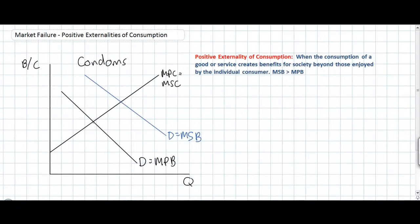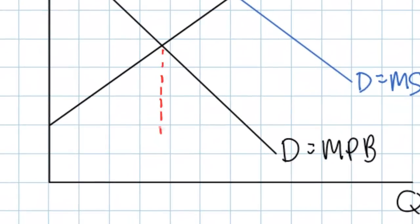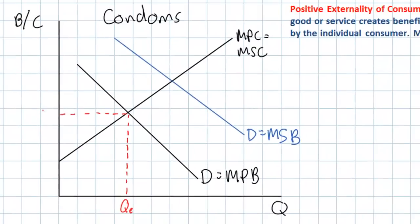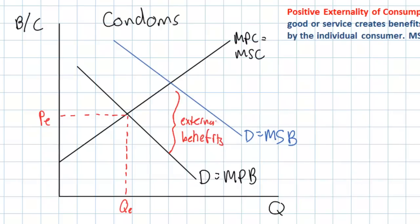Now what makes condoms a market failure? When individual consumers — the men who choose to use or not to use condoms — make this decision based only on their private benefit, there will be a quantity of condoms used equal to QE. QE represents the private quantity of condoms that will be used when only the private benefits of men are considered, and the price paid will be PE. The distance between the MPB and the MSB represents the external benefits of condom use.